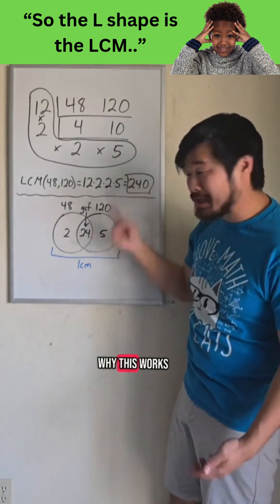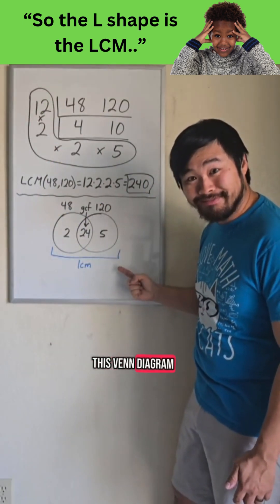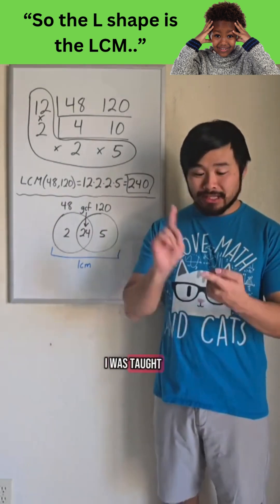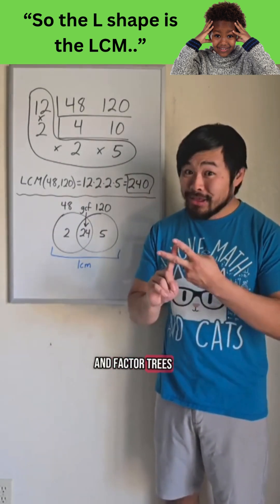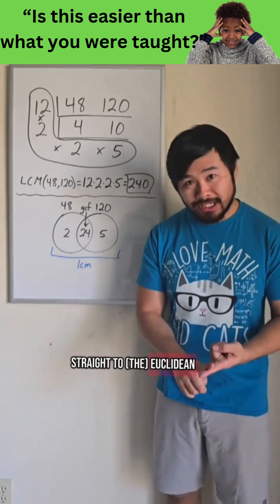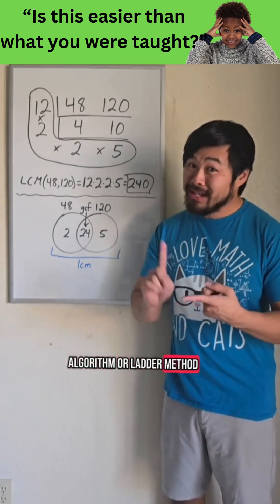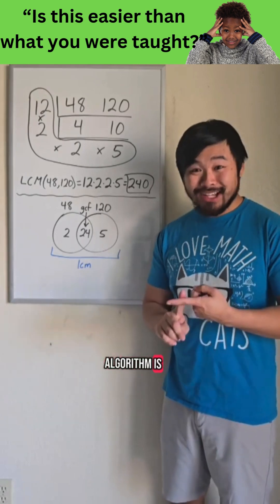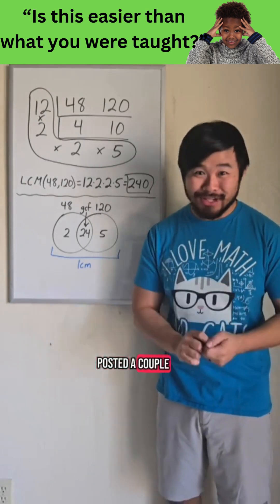And we can kind of see why this works by looking at this Venn diagram. So in school, I was taught to list factors and factor trees, and those are important. But if you asked me to find the greatest common factor now, I would go straight to Euclidean algorithm or ladder method. If you don't know what Euclidean algorithm is, check out the video that I posted a couple videos ago.